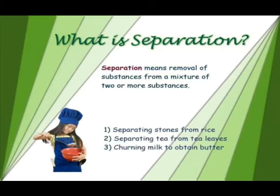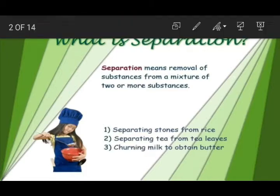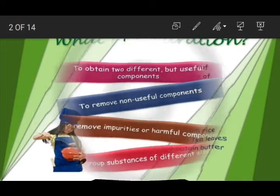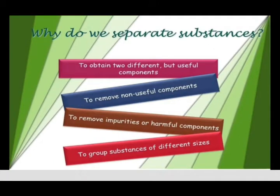Here you can see examples of separation. First is separating stone from rice. Second is separating tea from tea leaves. Third is churning milk to obtain butter — that means from milk we obtain butter by churning.